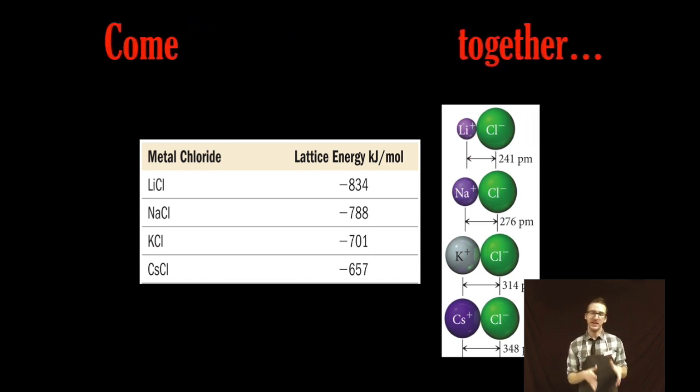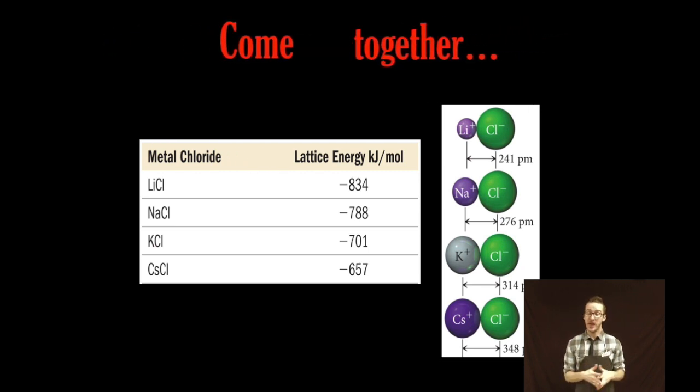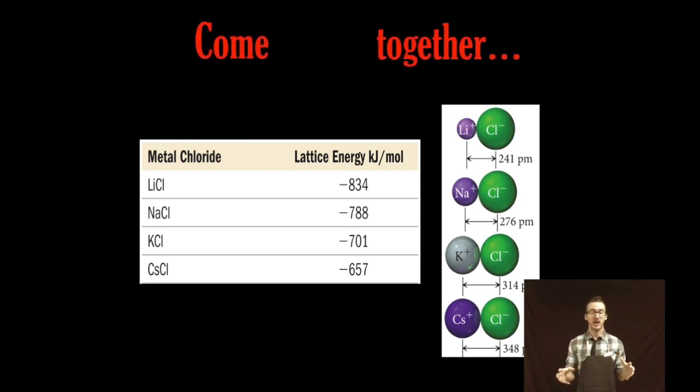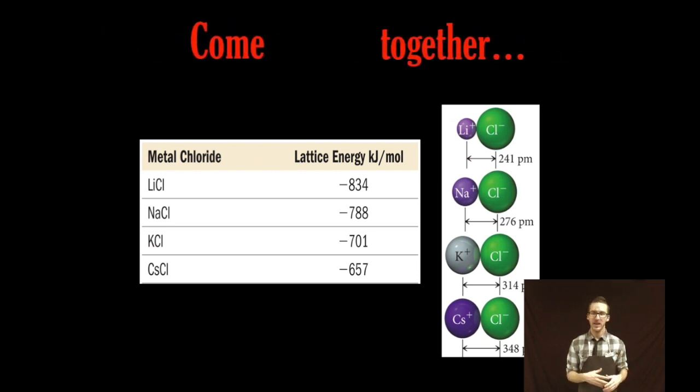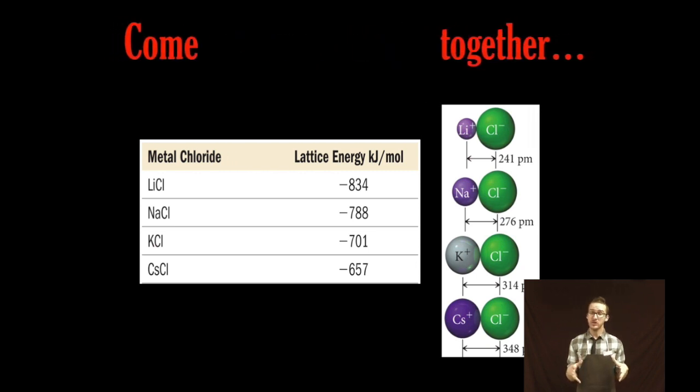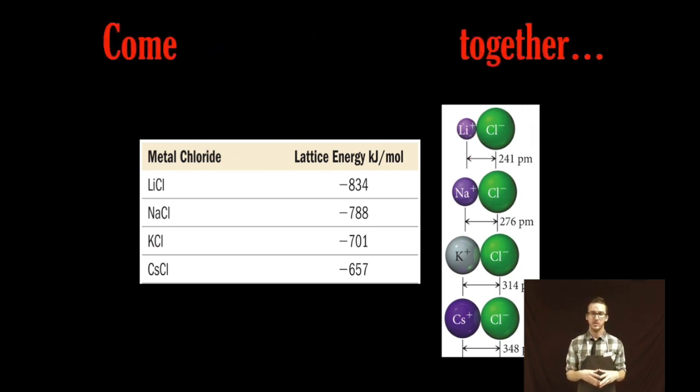Now don't get thrown off by the negative signs in front of those lattice energies. Those values simply indicate the energy released as gaseous ions come together to form the solid crystal lattice. As you take a look at those examples notice that each ionic compound is made up of a cation that has a positive one charge and an anion that has a negative one charge. Notice that the closer that those ions get to one another the greater the lattice energy and therefore stronger the ionic bond between those ions.